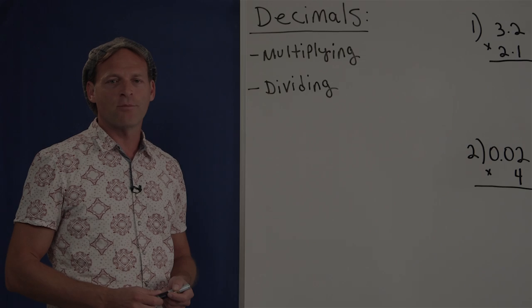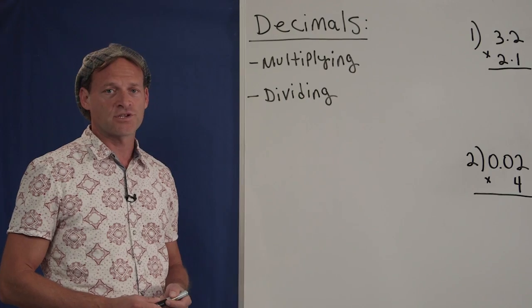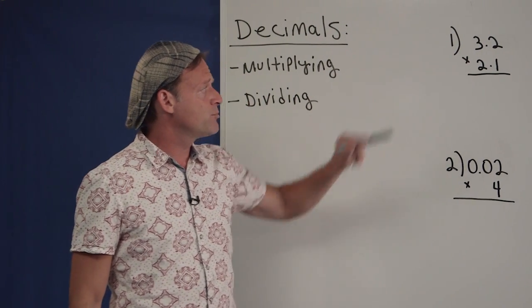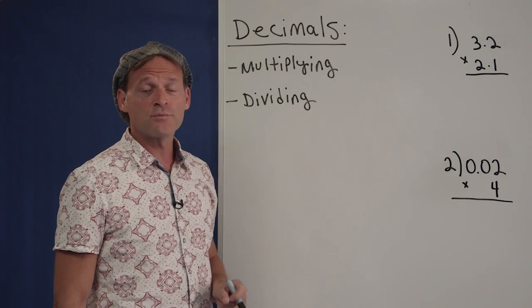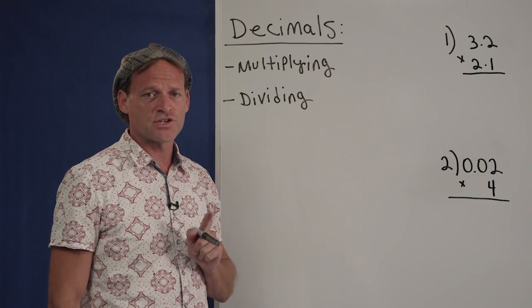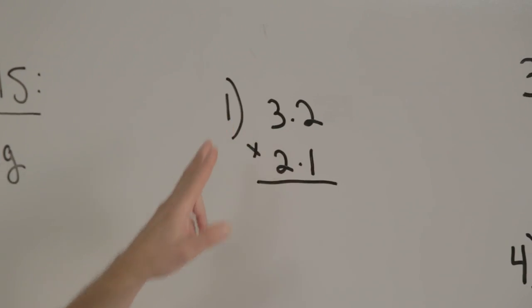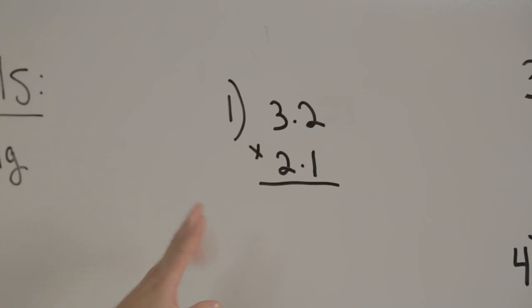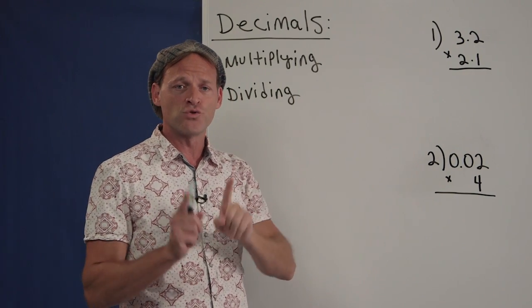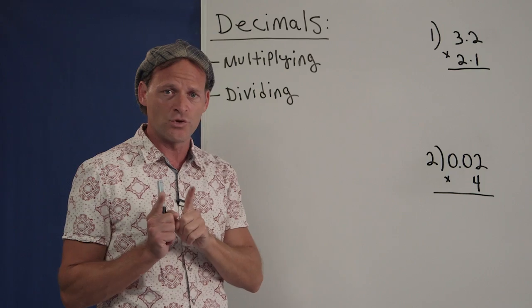In this section, we're going to learn how to multiply and divide with decimals. Let's take a look at this first example: 3.2 times 2.1. You do not have to line up the decimals here — they're only lined up because each term has two digits. The way you proceed is just multiply as you normally would, and then I'll show you what to do afterwards.